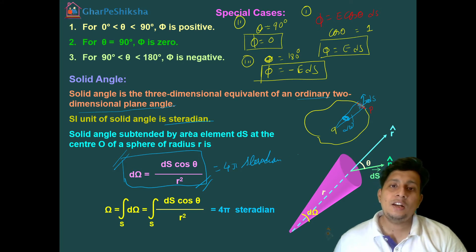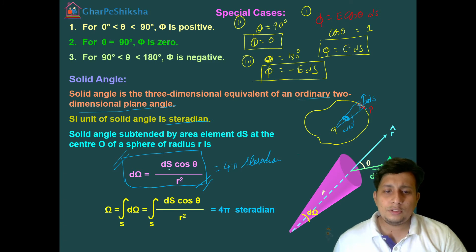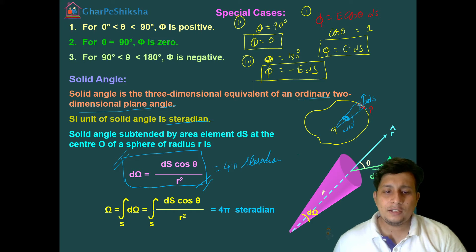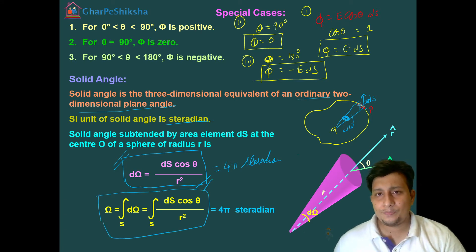And the value of this will be 4 pi steradians. If we integrate ds cos theta upon r square, integration of dΩ gives Ω, and the final answer is equals to 4 pi steradians. This is very important.